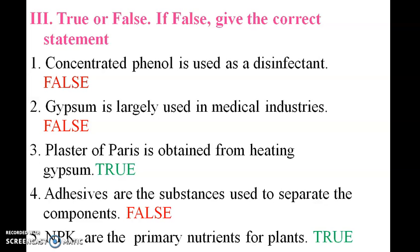Additives are a substance used to separate the carbonate — that is false. NPK are the primary nutrients for the plant — that is true. NPK stands for nitrogen, phosphorus, and potassium.